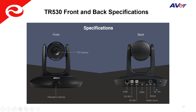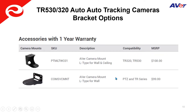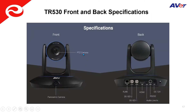There is RS232 control and 12 volts DC at 5 amps for power. For installing the camera, Aver offers a wall or ceiling mount, and also an L-type wall mount. Keep in mind the TR530 and TR320 must be installed vertically — the camera cannot be installed inverted. Some other Aver cameras can be inverted, but not this one.